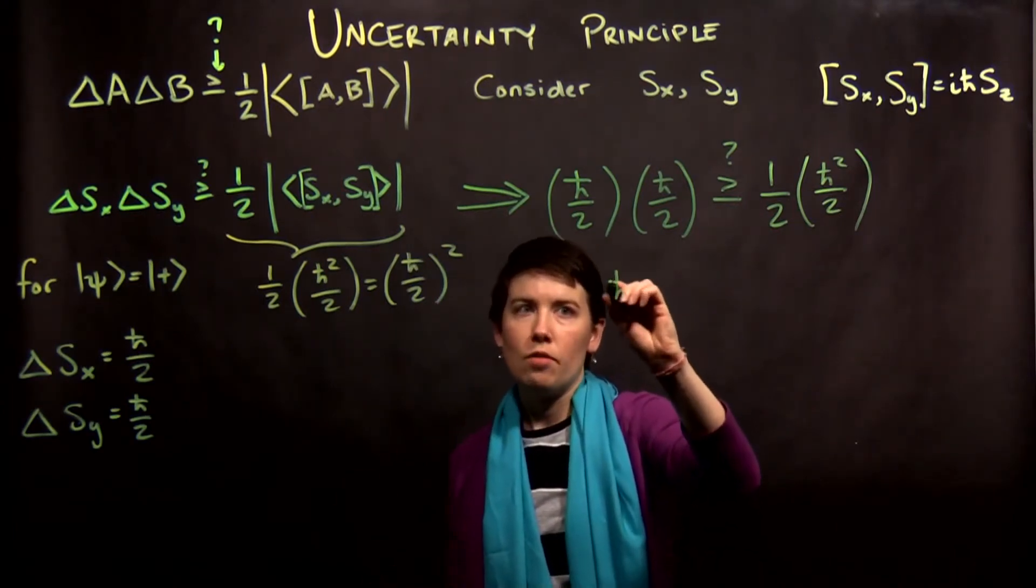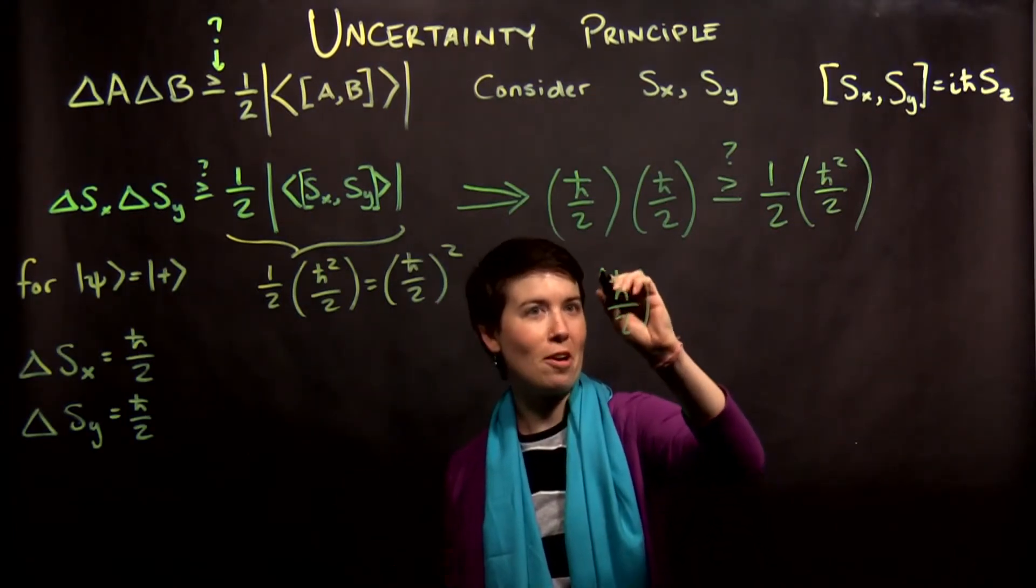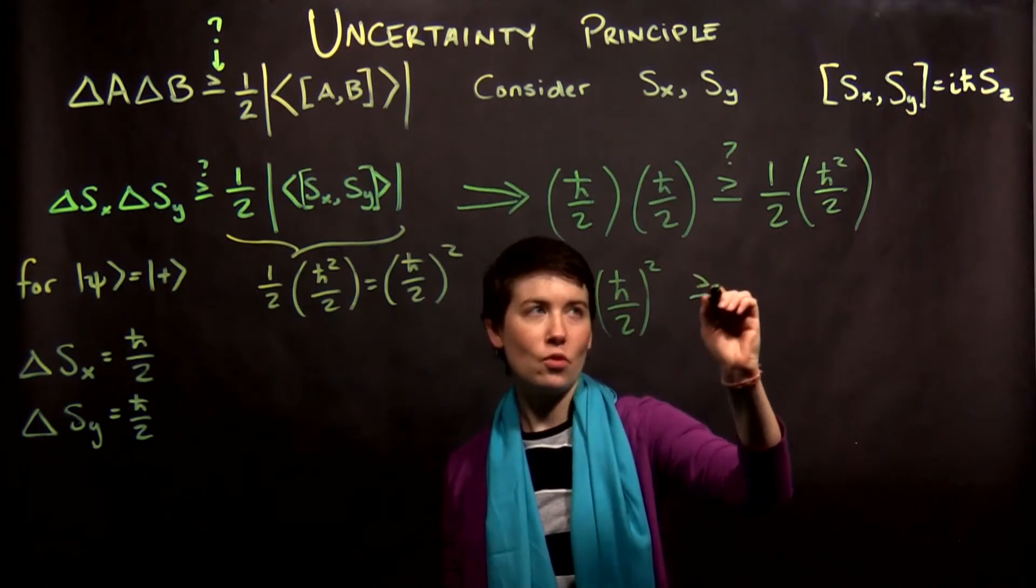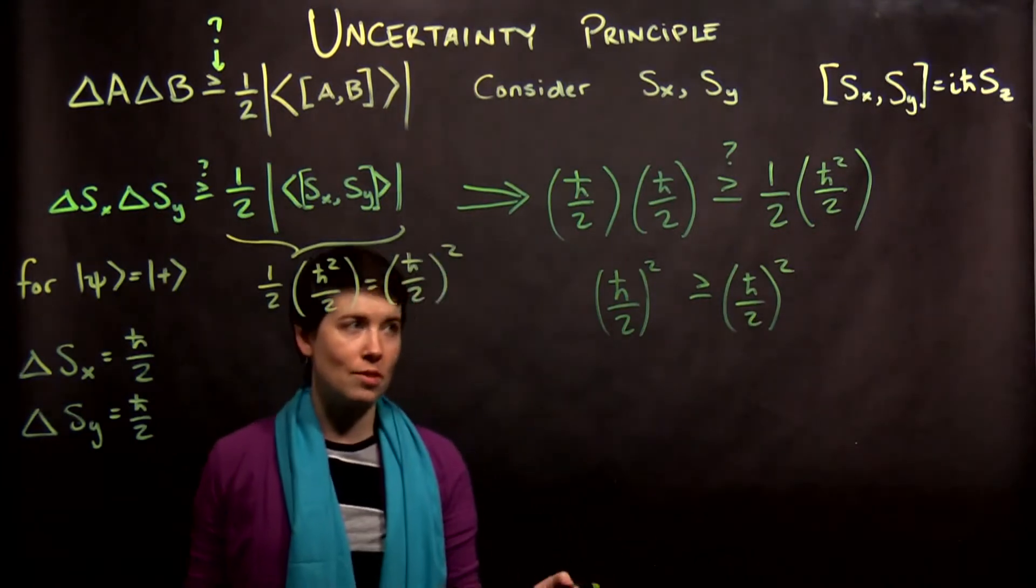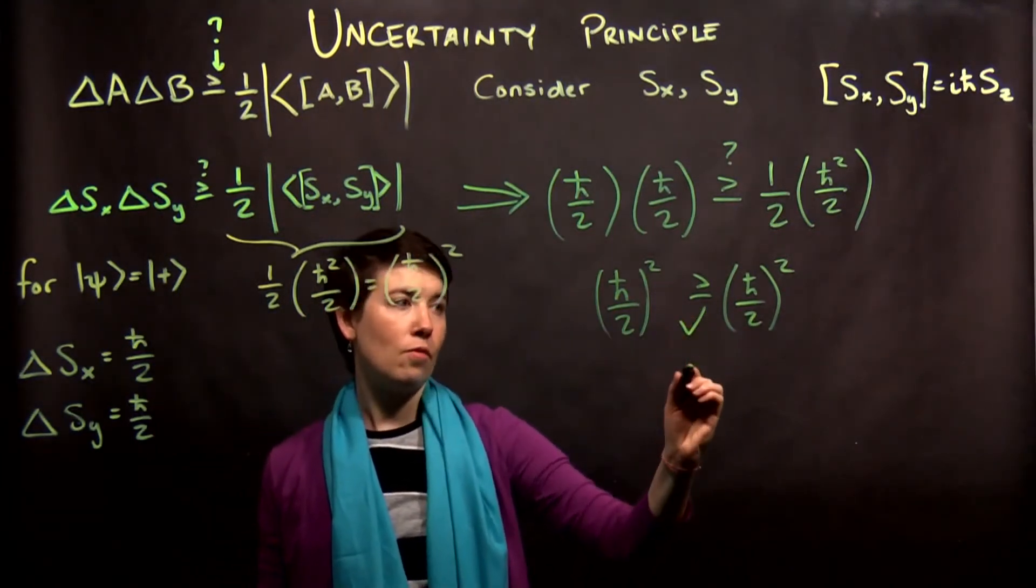So if you notice, what we actually have is that h bar over 2 squared is greater than or equal to h bar over 2 squared. So is that true? Yes. In fact, they're equal.